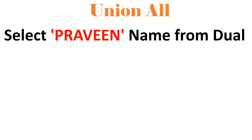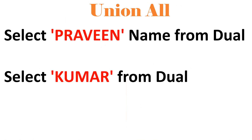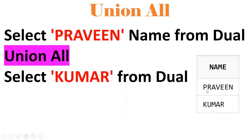In a similar fashion, what is a union alias? For example, when you execute one statement you get 'Praveen', and when you execute another you get 'Kumar'. If I want to club these two results into a single result, we should go for set operators — that is UNION. So the output will be Praveen and Kumar combined.